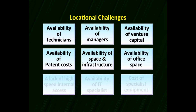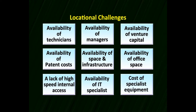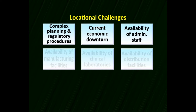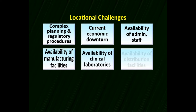We need businesses in terms of building offices and factories. We need connectivity through internet and technology upgradation. We need specialists, equipment, and complex planning in terms of regulatory performance of the government. Economic catalyzation is important so that infrastructure is built in the right combination. We need administrative staff to coordinate the various factors of production, manufacturing facilities, special business information, clinical laboratories, and distribution facilities so that products can reach consumers.